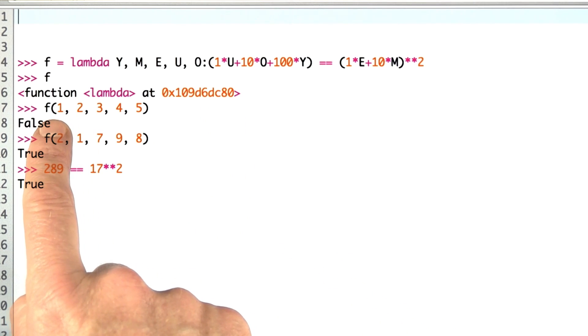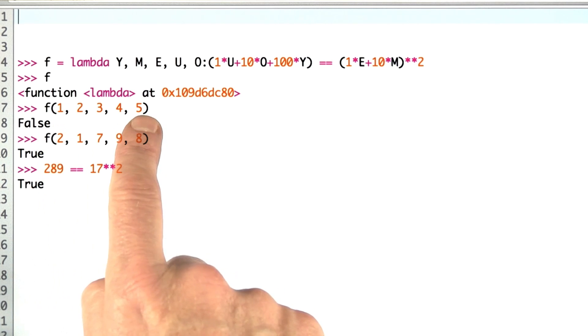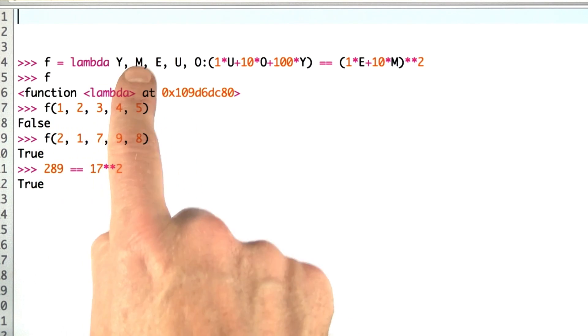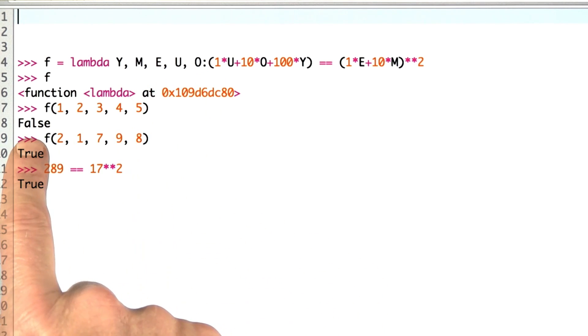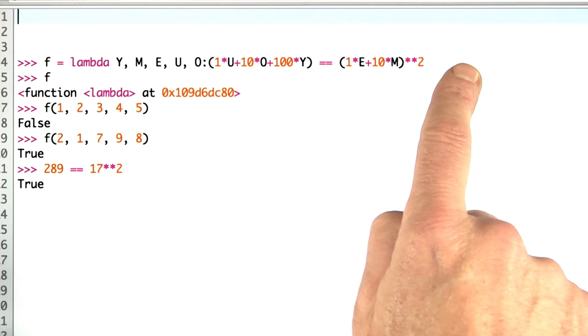Then I'd say, is f true of the sequence 1, 2, 3, 4, 5? That is, y is equal to 1, m is 2, e is 3, u is 4, and o is 5. The answer is no. It's false. This is not equal.